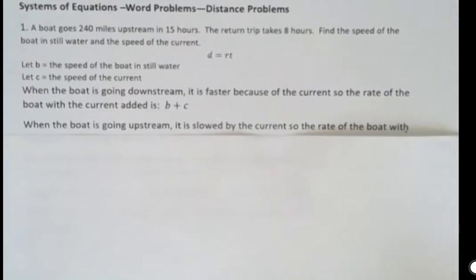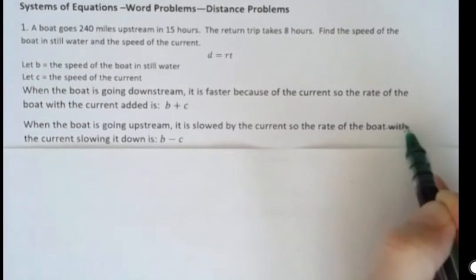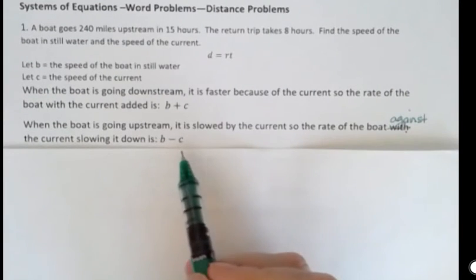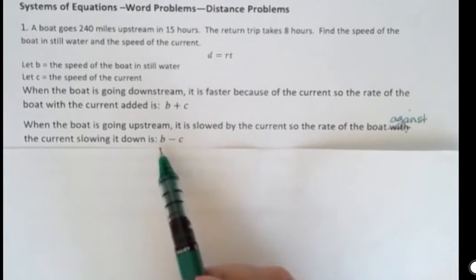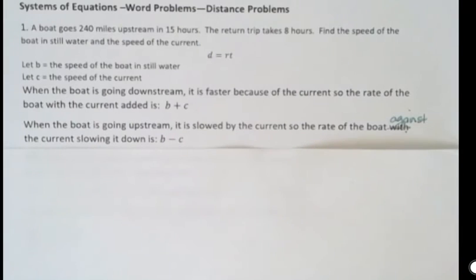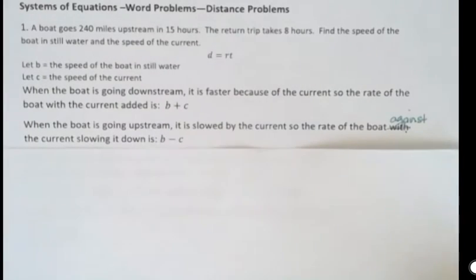When the boat is going upstream, it is slowed by the current. So the rate of the boat against the current is slowing it down. So it's b minus c. Notice that I always put the b first. The boat is first. It's the boat that's being slowed by the current. We don't want to say the current is being slowed by the boat because it's not. The current is moving along at its pace. It doesn't care what's happening to the boat. But the boat, we take away or add the current depending on whether it's going up against the stream or down with the stream.